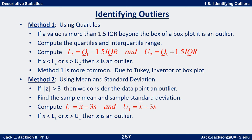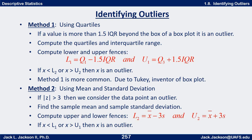This method uses quartiles. If a value is more than one and a half interquartile ranges beyond the box of the box plot, it's an outlier. First, compute the quartiles and the interquartile range, then compute what we call fences. The lower fence L1 is Q1 minus 1.5 times the interquartile range. The interquartile range is Q3 minus Q1 — that's the length of the box in the box plot. Multiply that by one and a half, move that far below Q1, and that's the lower fence. Anything below that is an outlier.